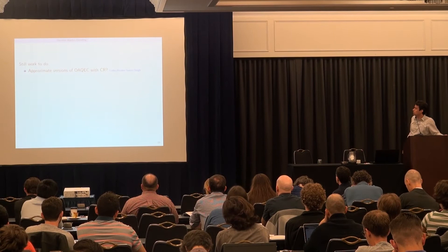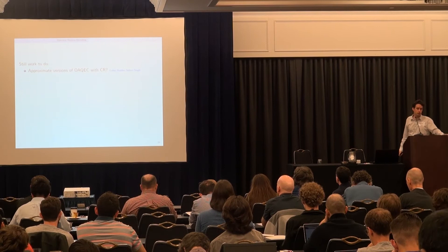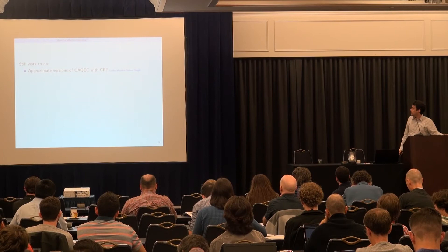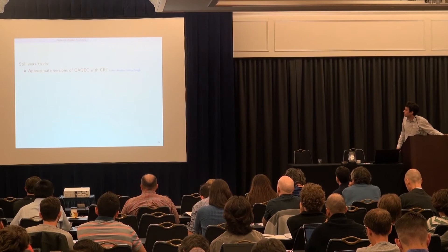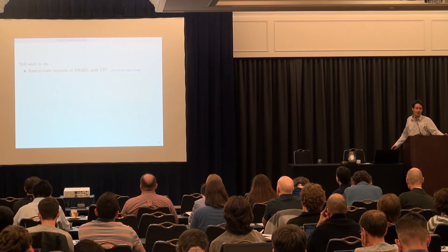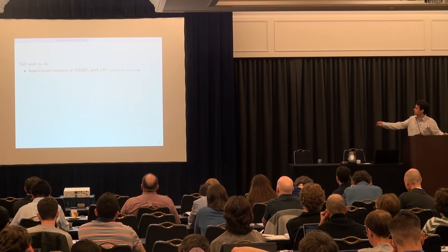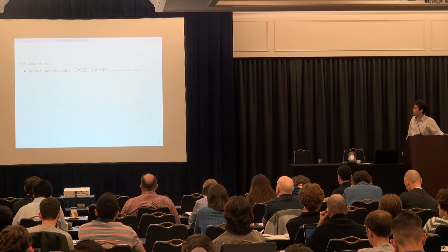This is the last slide — a few things that still need to happen. One thing I'm very interested in is approximate versions of this operator algebra quantum error correction. The theorem I described was exact, but clearly it would be good to put epsilons in it. There was an interesting paper on this — sorry I misspelled your name, Brian, it was late last night — three of the four authors are in the audience. It's a very nice paper, though I haven't totally digested it and I'm not sure it completely addresses everything I'd want to know.